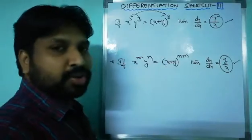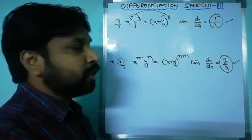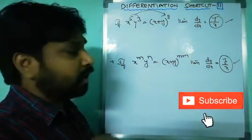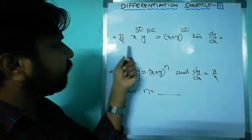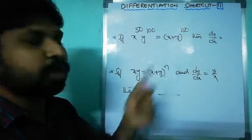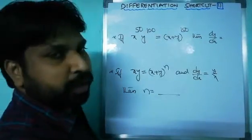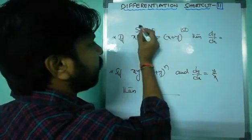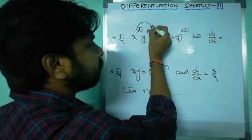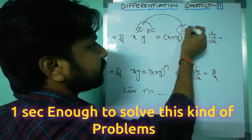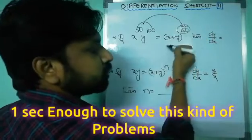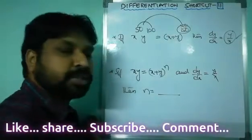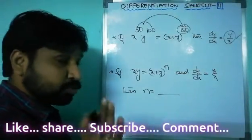This is a very easy shortcut — you can answer within one second. For example, if x^50 times y^100 equals (x+y)^150, what is dy/dx? Just check: 50 plus 100 equals 150 — the condition is satisfied. So the answer is directly y/x. No calculation needed.